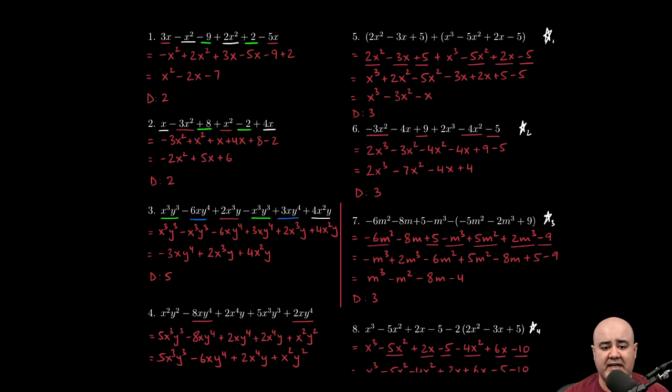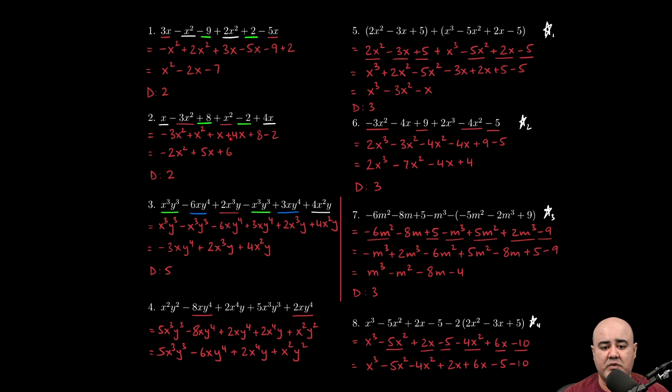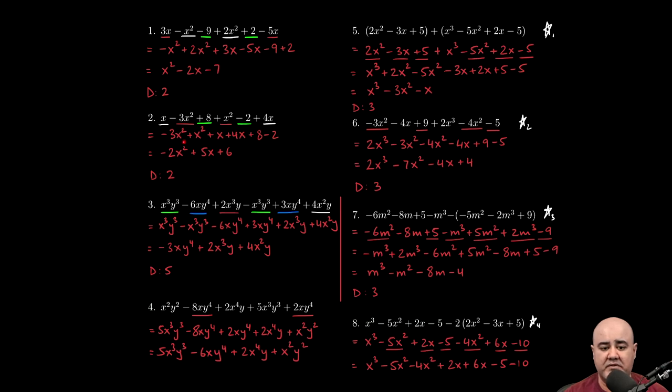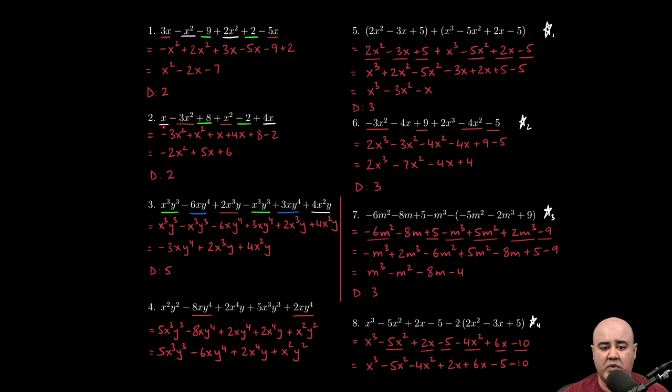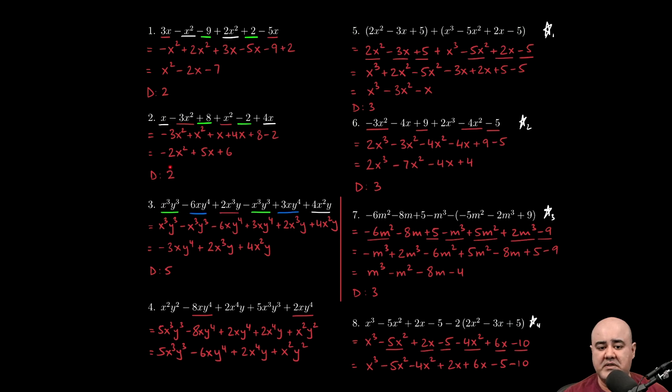The next one, the same exact thing happened. We have x minus 3x squared plus 8 plus x squared minus 2 plus 4x. I'm collecting all the x squared terms or the highest degree terms first. Those go in the front. Then one lower degree, so x and 4x, those go second. And then finally, 8 and negative 2, those go last. Combine like terms. The highest power of the variable we see here is 2, so that's our degree.